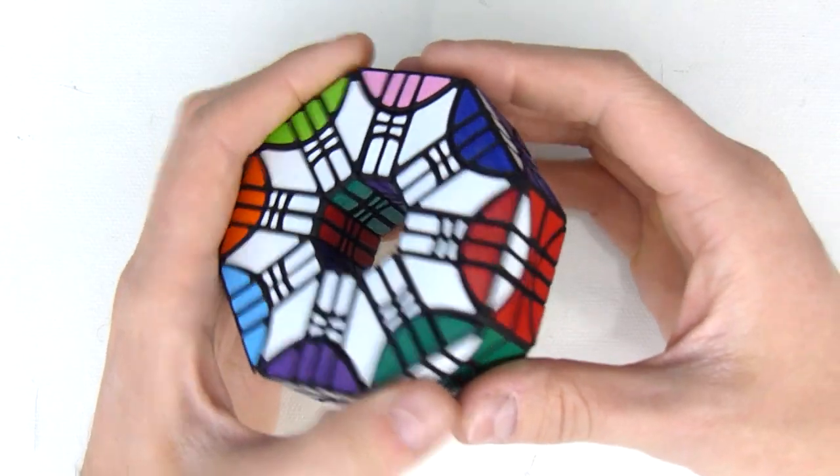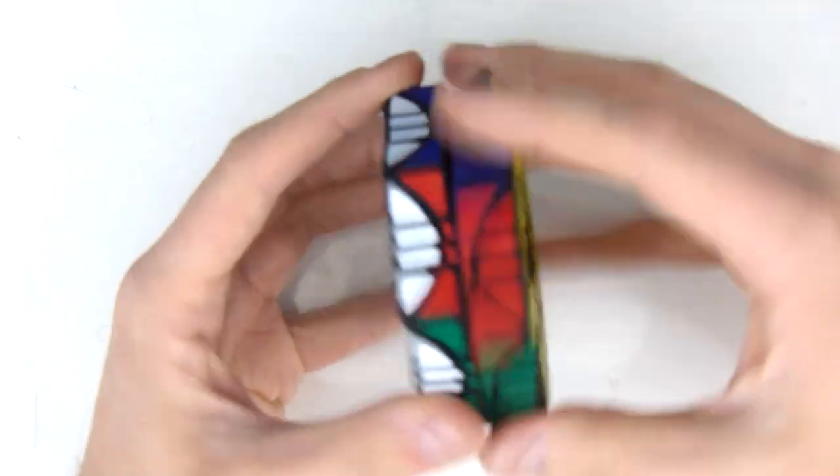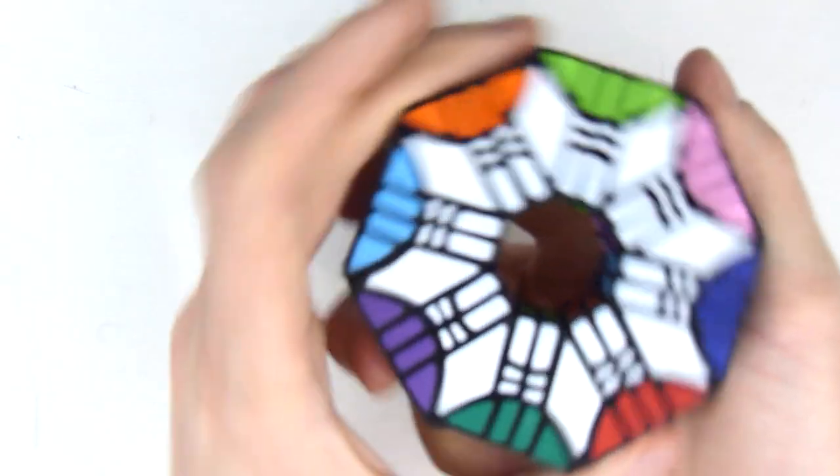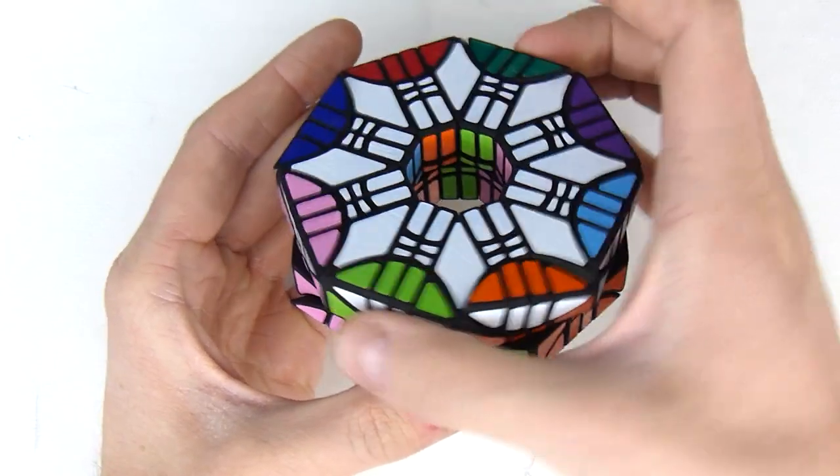And then there's this slice turn right there. So we've got the whole two parts turning one over the other. You can see it on the inside as well.